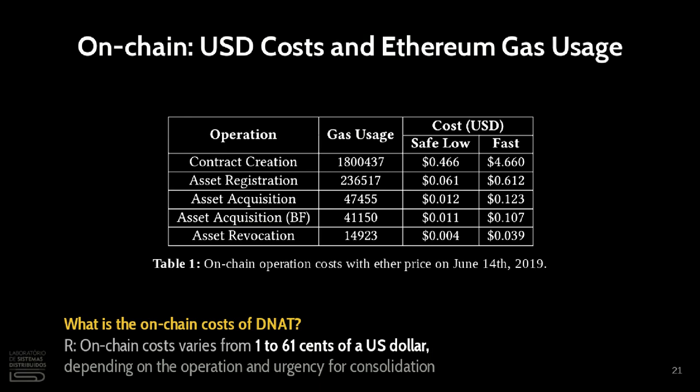If an asset owner needs to urgently consolidate the asset registration — and here urgently means less than 2 minutes — she would have paid 61 cents of a dollar. But if the user doesn't have the urgency, she would have paid 6 cents of a dollar to have the operation consolidated within 30 minutes.